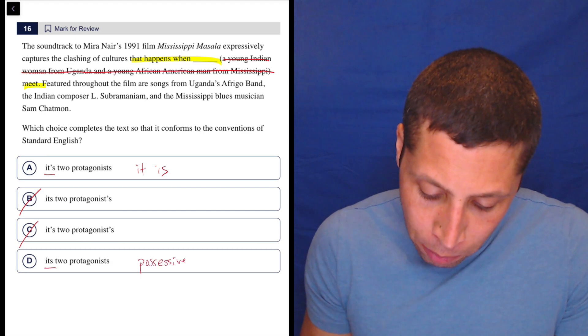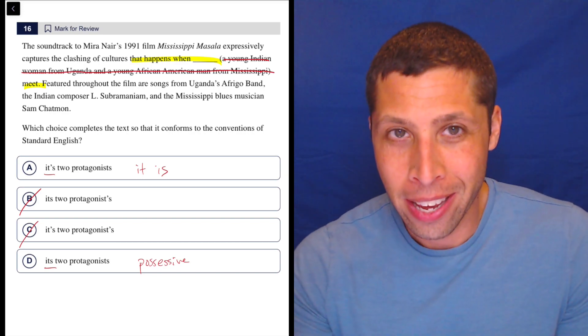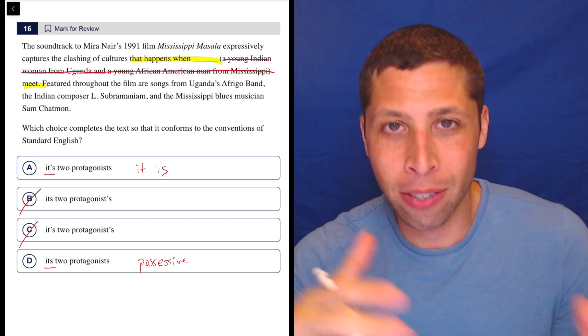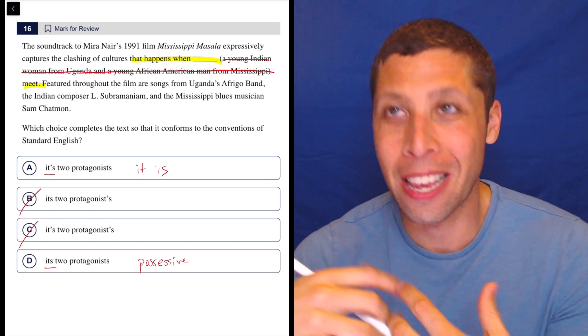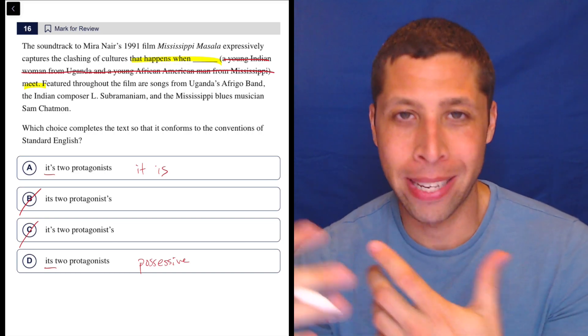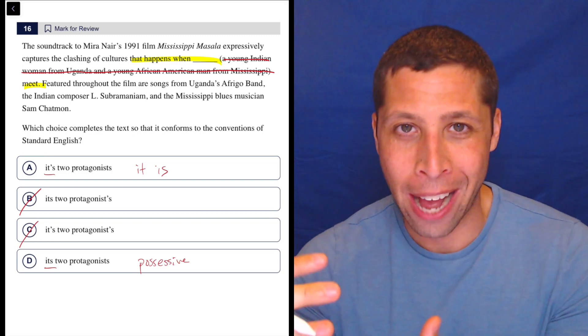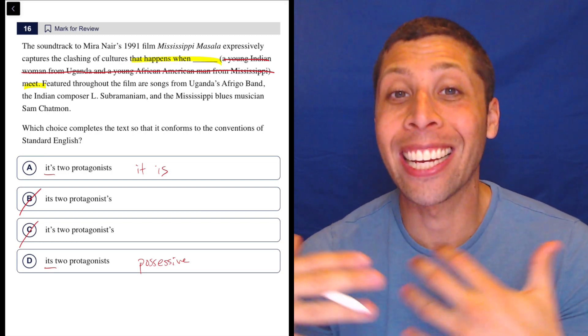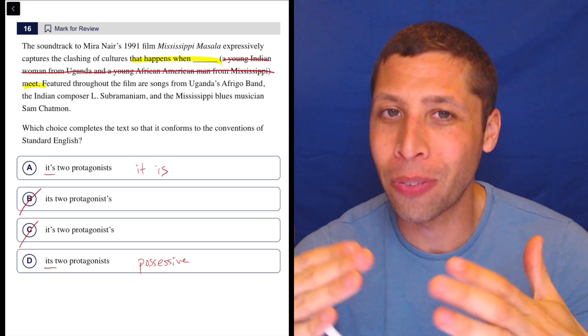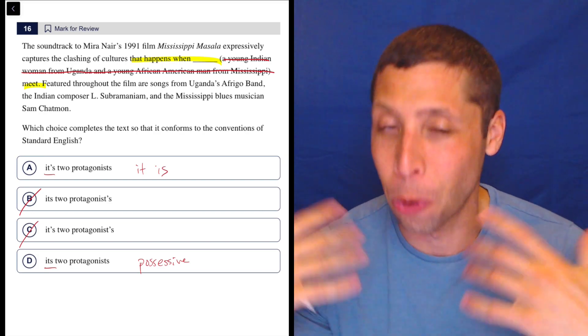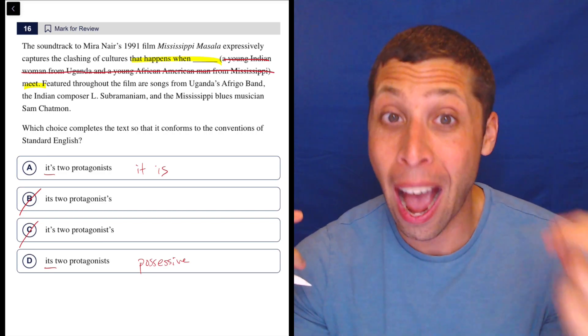Now that seems weird because we just said that the apostrophe means that protagonists would possess something. Well, this is the weird thing about English—apostrophes in most cases mean possession. But on pronouns, apostrophes mean contraction, that we're taking two words and smushing them together. We don't use apostrophes on possessive pronouns. I don't know why. It's just the way it goes. So you have to know that.